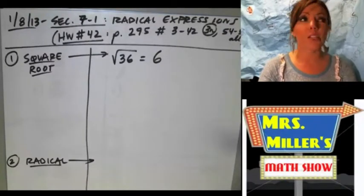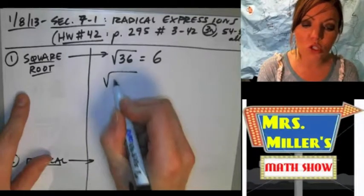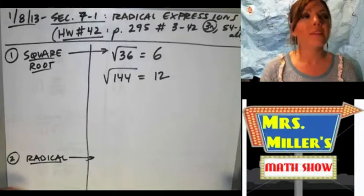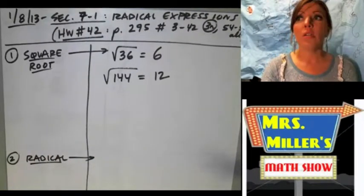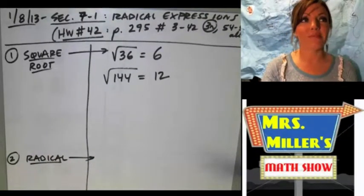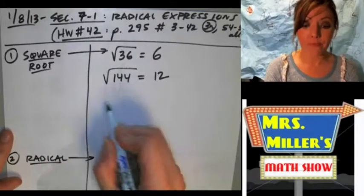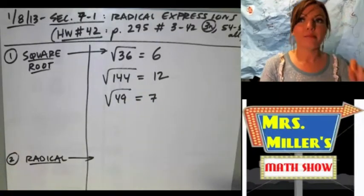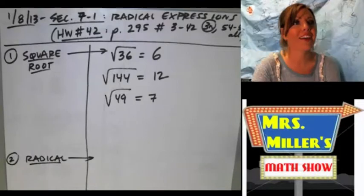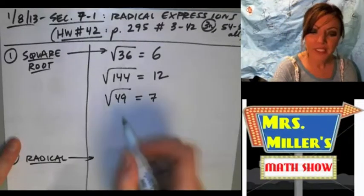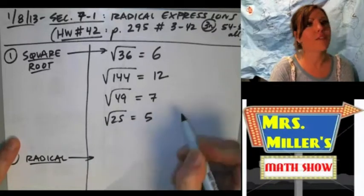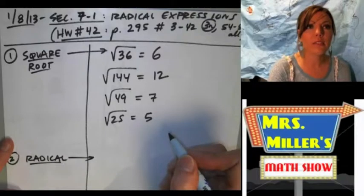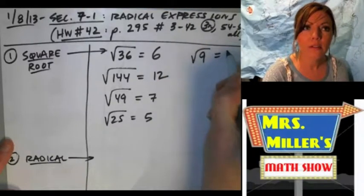Tyler: 144. And what is the square root of 144? 12. Everybody give it up for Tyler. Can somebody give me another square root? Sloan: 49. What is the square root of 49? Everybody give it up for Sloan. Zach: 25. And what is the square root of 25? Everybody give it up for Zach. Samantha: 9. And what is the square root of nine? Three. Everybody give it up for Samantha.